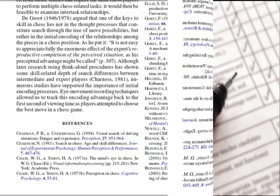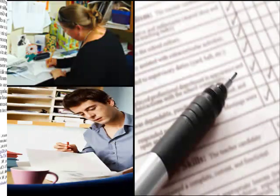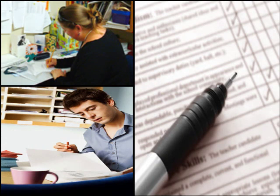Primary research articles are peer reviewed — a process by which other respected scientists in the same field have critiqued the work to ensure accuracy before the article is published.